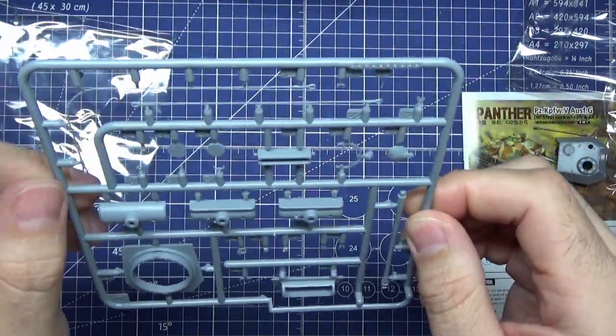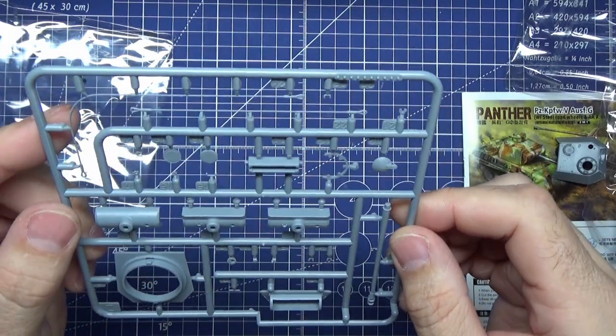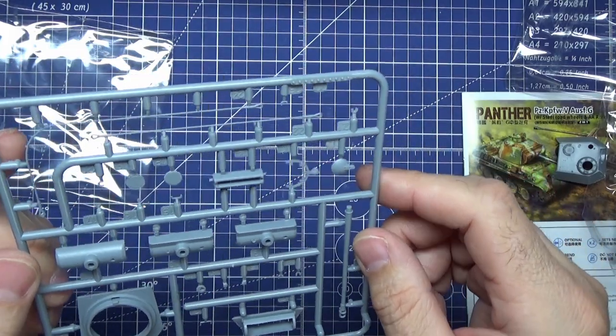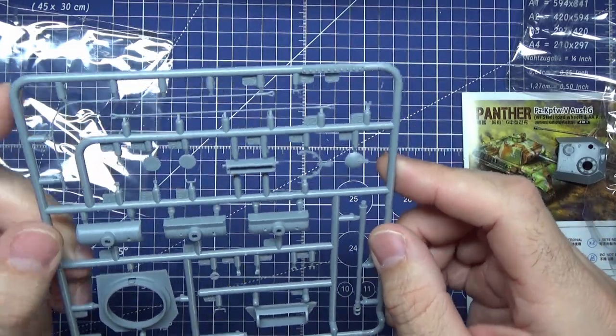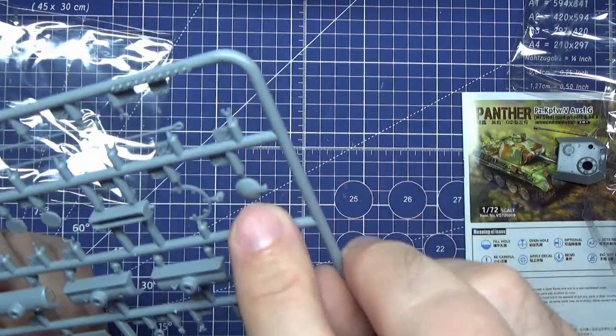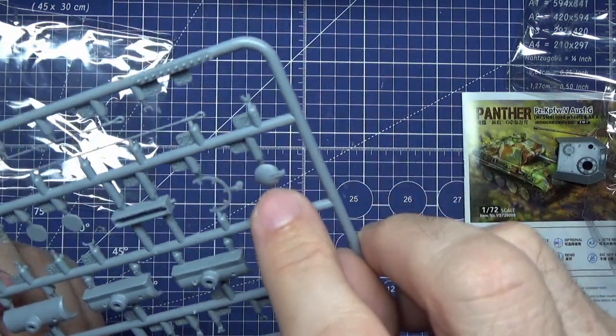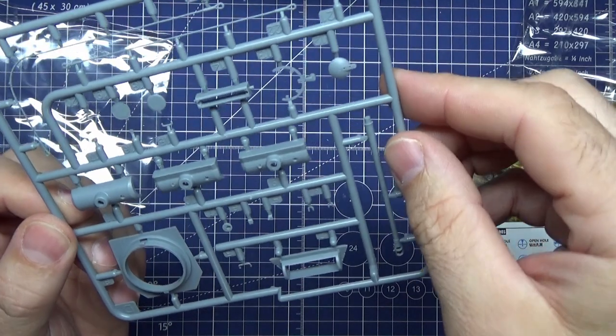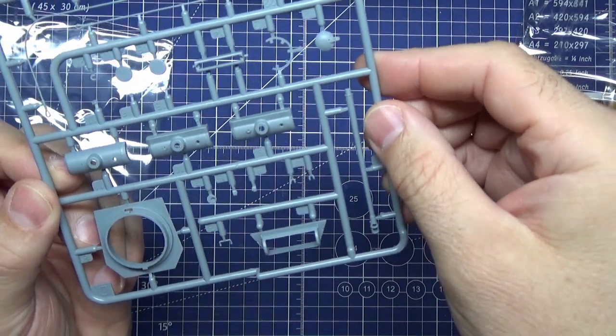As you can see, three different gun mantlets I believe. You've got your towing cables there. That's nice detail as well - there's a cast finish on that. I can see that. It looks well - I can't see any flash on there.